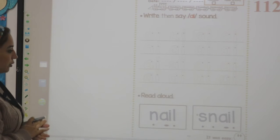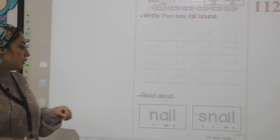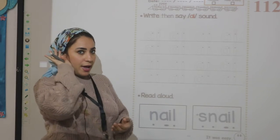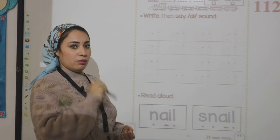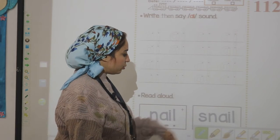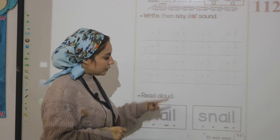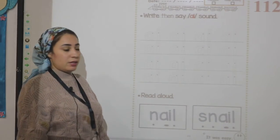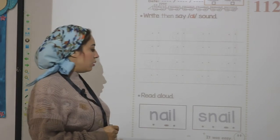Next, here we are going to read these words. Nail. What is the first sound in the word nail? Nail. And what is the middle sound? A. And what is the last sound? L. Nail. Look at this one. What is the first sound here? S. And what is the next sound? N. And what is the middle sound? A. And what is the last sound? L. Snail.